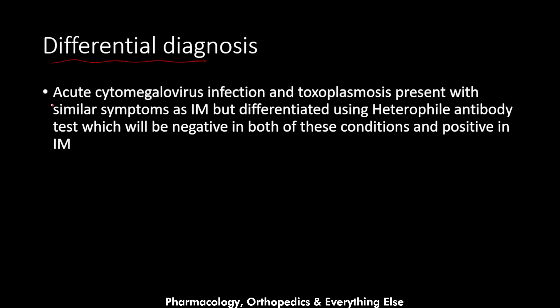Regarding differential diagnosis, the most common differentials are acute cytomegalovirus infection and toxoplasmosis. These infections present with similar symptoms to mono but are differentiated using the heterophile antibody test, which will be negative in both of them and positive in mono.